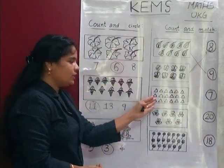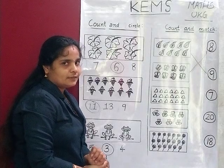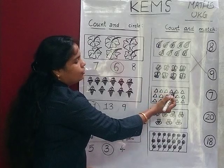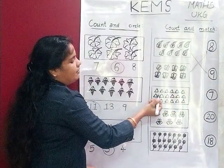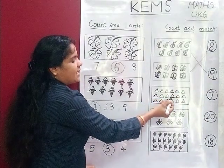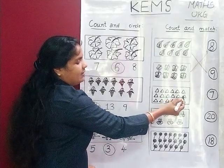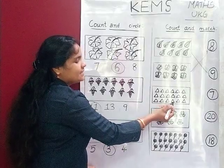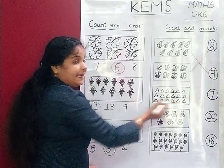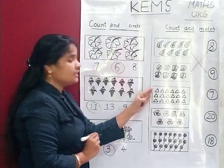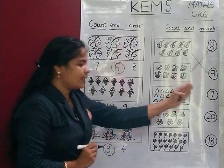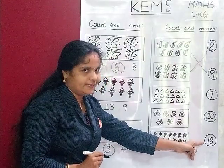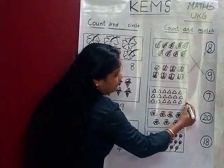Then how many triangles are there? Let's count: 1, 2, 3, 4, 5, 6, 7, 8, 9, 10, 11, 12, 13, 14, 15, 16, 17 and 18. There are 18 triangles. So we find the number 18. Yes, 18 is here. So let's match.